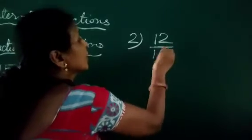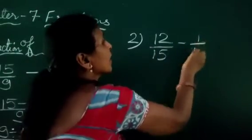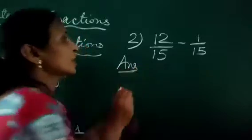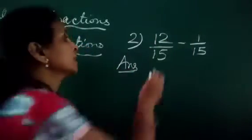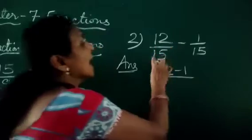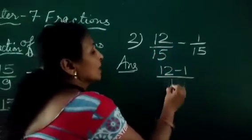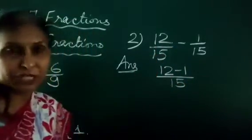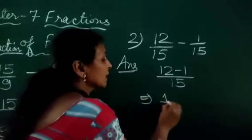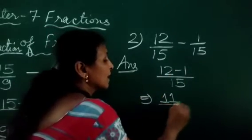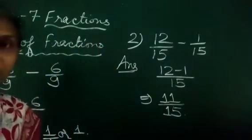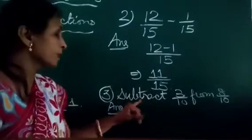Let's see another example: 12 upon 15 minus 1 upon 15. We write the numerator as 12 minus 1 and the common denominator as 15. Subtracting: 12 minus 1 is 11 upon 15. This is the answer.